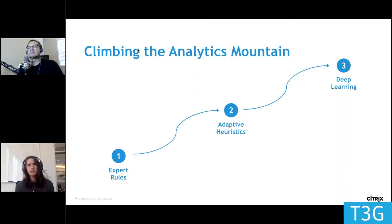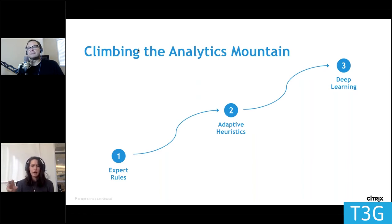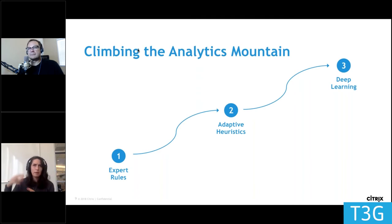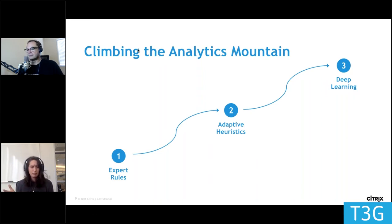With deep learning, feature engineering often isn't the case. As I've shown you with the band instruments example, we had to actually figure out: we need to collect information about the mouthpiece, the number of keys, what it's made of. Whereas instead you could just show it — these are trombones — and show it a million pictures of trombones and just say, this is a trombone, this is a trombone.